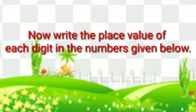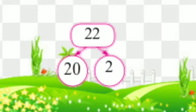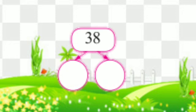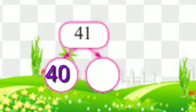Now write the place value of each digit in the numbers given below. In 22, the place value of the first 2 is 20, and the second 2's place value is 2. In 38, the place value of 3 is 30, and the place value of 8 is 8. In 41, the place value of 4 is 40, and the place value of 1 is 1.